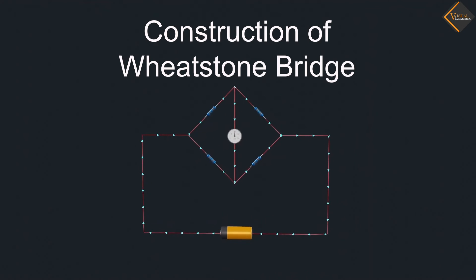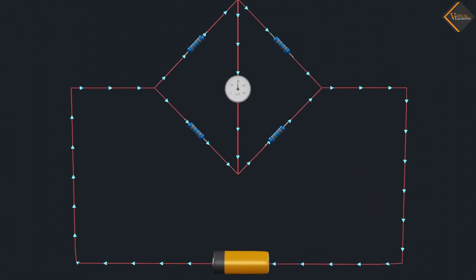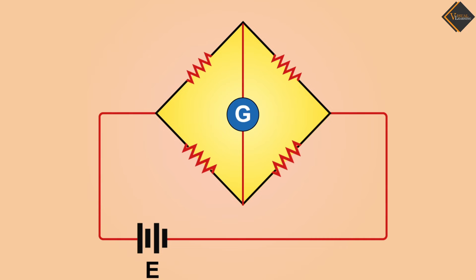Construction of the Wheatstone Bridge. In a Wheatstone Bridge, there are four arms. Two arms have known resistances, while the other two arms have an unknown resistance and a variable resistance.